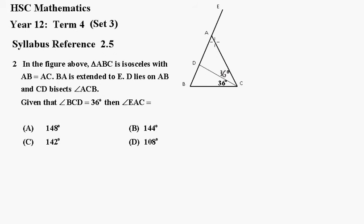But triangle ABC is isosceles, so this must be 72 degrees down here.